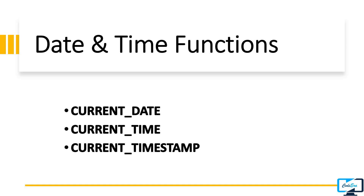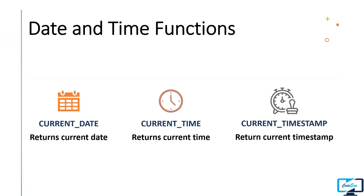In date and time functions, first we will discuss these 3 functions which are CURRENT_DATE, CURRENT_TIME, and CURRENT_TIMESTAMP. The definitions of these functions are clear by their names. CURRENT_DATE returns the current date, CURRENT_TIME returns the current time, and CURRENT_TIMESTAMP is used to get the current timestamp. So let's execute them one by one.